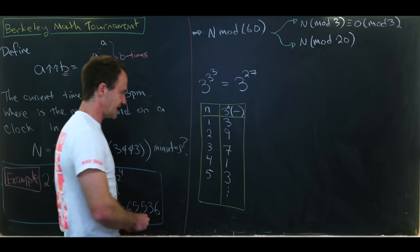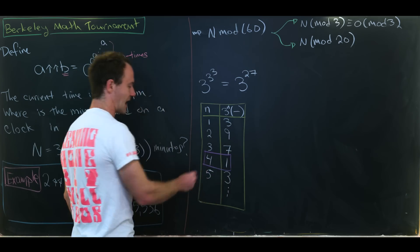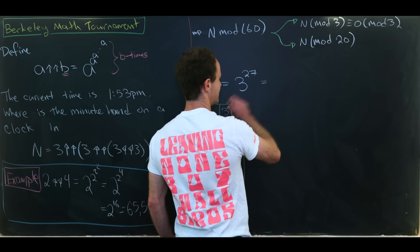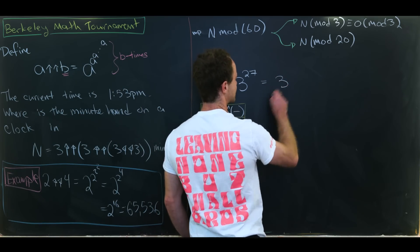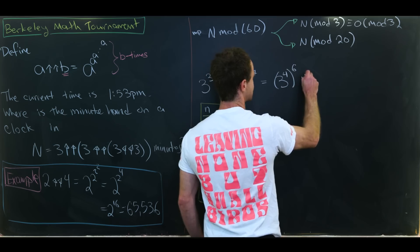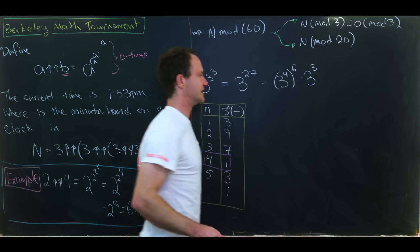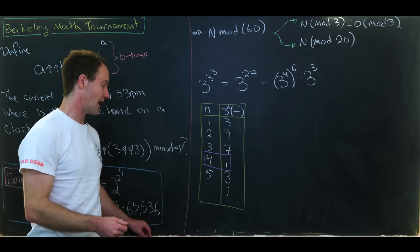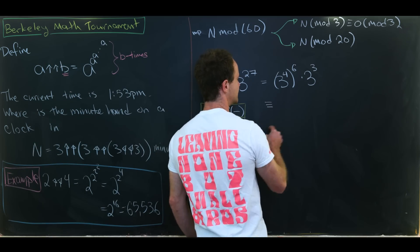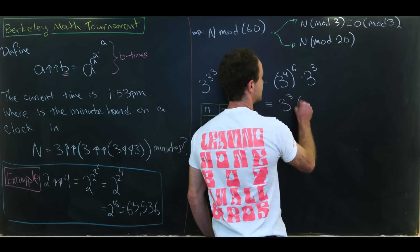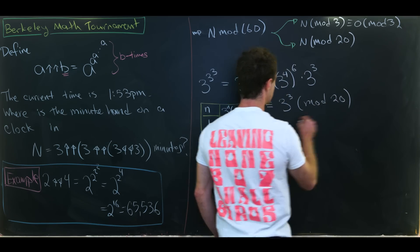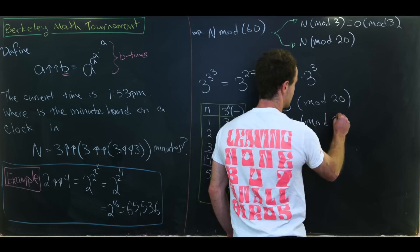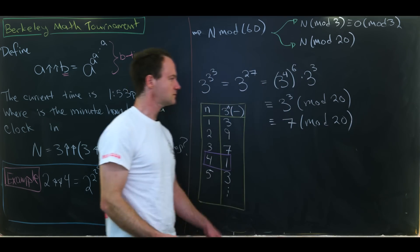So the important takeaway here is if we raise 3 to a power of 4 we get the number 1. And that tells us that perhaps we should rewrite this as 3 to the 4 to the 6th power times 3 to the 3. That's because 24 plus 3 is 27. So that's how that works out. But now this is going to reduce to just 3 to the 3 modulo 20. Or in other words that will be 27 mod 20 which is 7 mod 20.